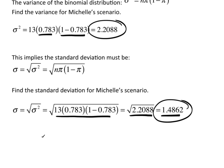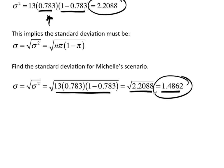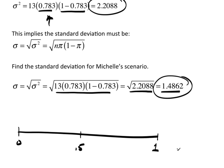This distribution won't be very symmetric because the probability of success is 0.783. Think of pi as the probability of success on a scale of 0 to 1. If the probability of success is 0.5, then the distribution is going to be very, very symmetric — it's going to taper off in an extremely symmetric manner.